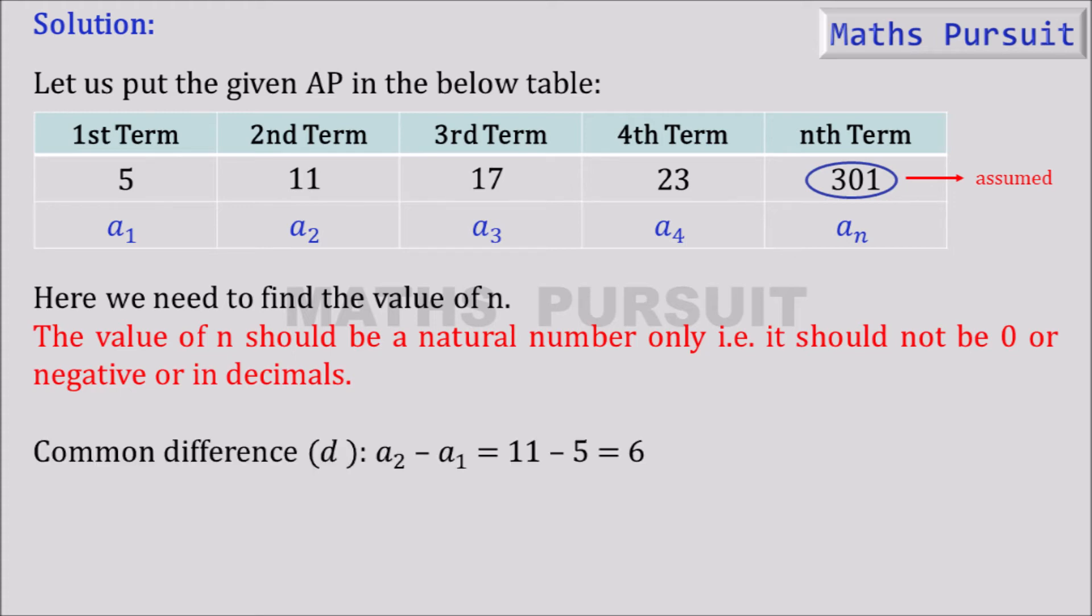Now we are going to find out common difference d. So here we are taking a2 minus a1. We can take any of the terms to find the common difference because in the question it is given that this is an AP. So a2 minus a1 is equal to 11 minus 5, that is equal to 6.